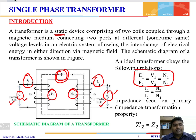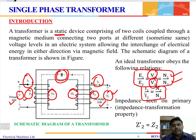The basic equation for the transformer is E1/E2 = V1/V2 = N1/N2, where E1 and E2 are the induced EMFs on the primary and secondary sides respectively, and V1, V2 are the terminal voltages. Also, I1/I2 = N2/N1. We can transfer the impedance from one port to the other — from the high voltage side to the low voltage side or vice versa — by dividing or multiplying with k², where k is the turns ratio N1/N2.